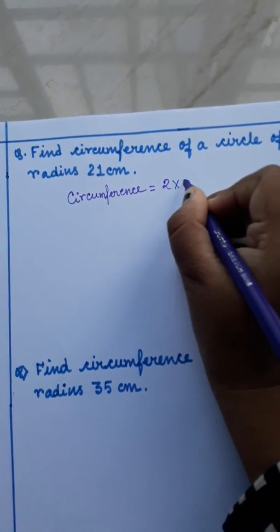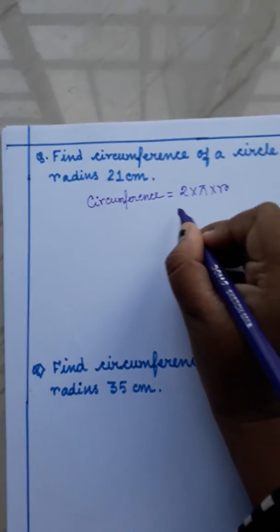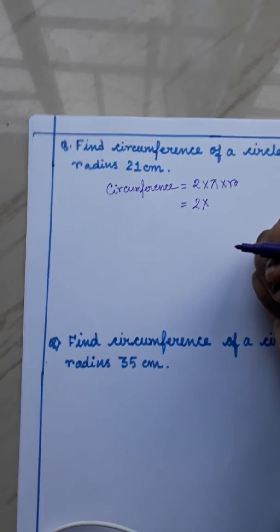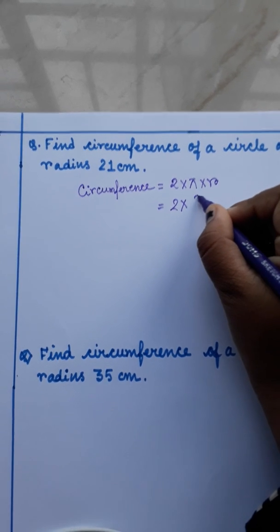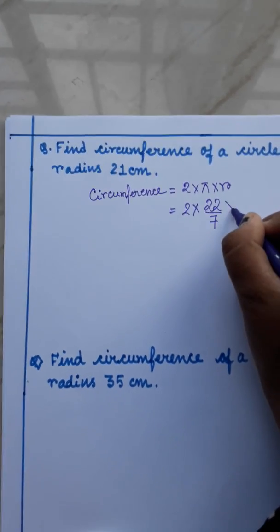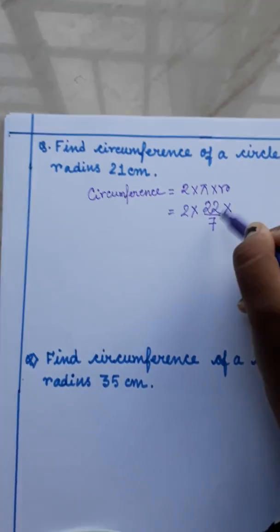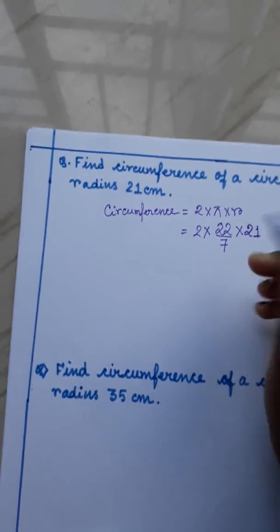Here 2 we will write down, then value of the pi. Which value we will take? 22 by 7. So here we will write down 22 by 7. Next, r. What is the value of the r given? 21 cm. So here we will write down 21.